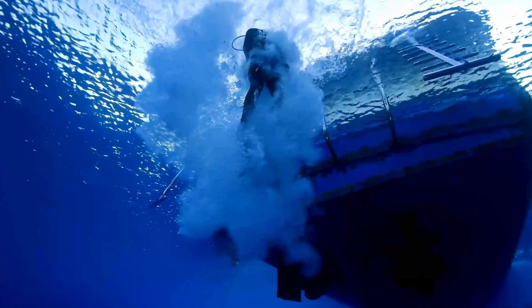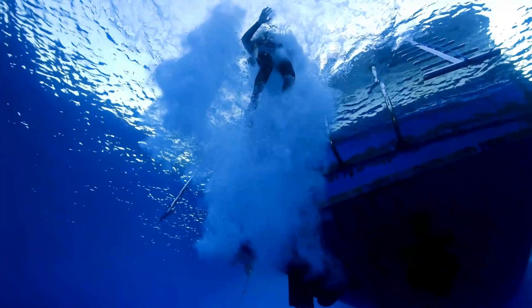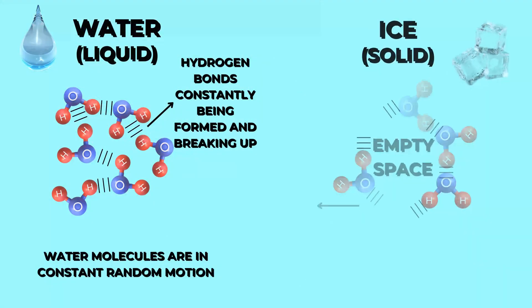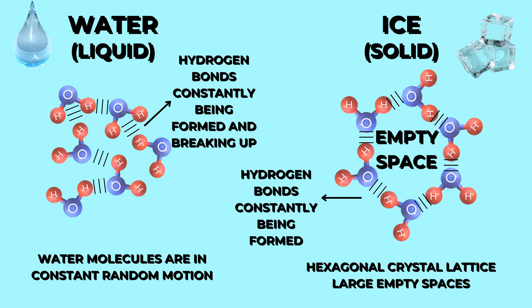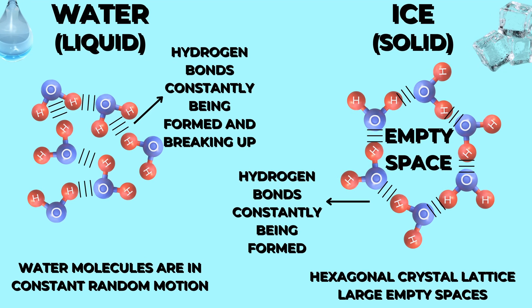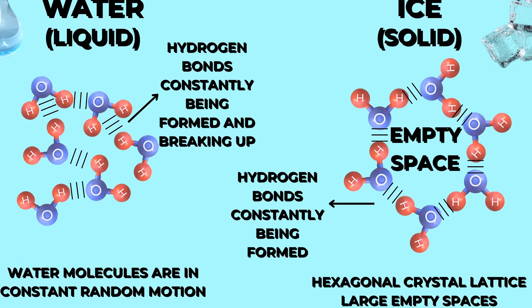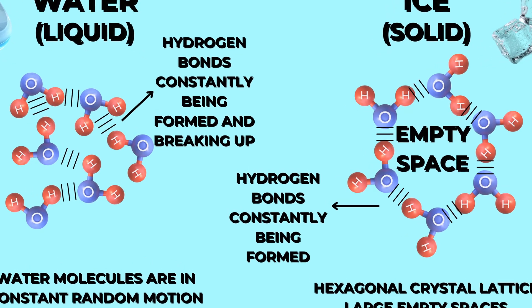But as the temperature drops, the water molecules slow down. The hydrogen bonds become more dominant, and the water molecules start to arrange themselves into a crystalline structure. This crystalline structure is what we call ice.